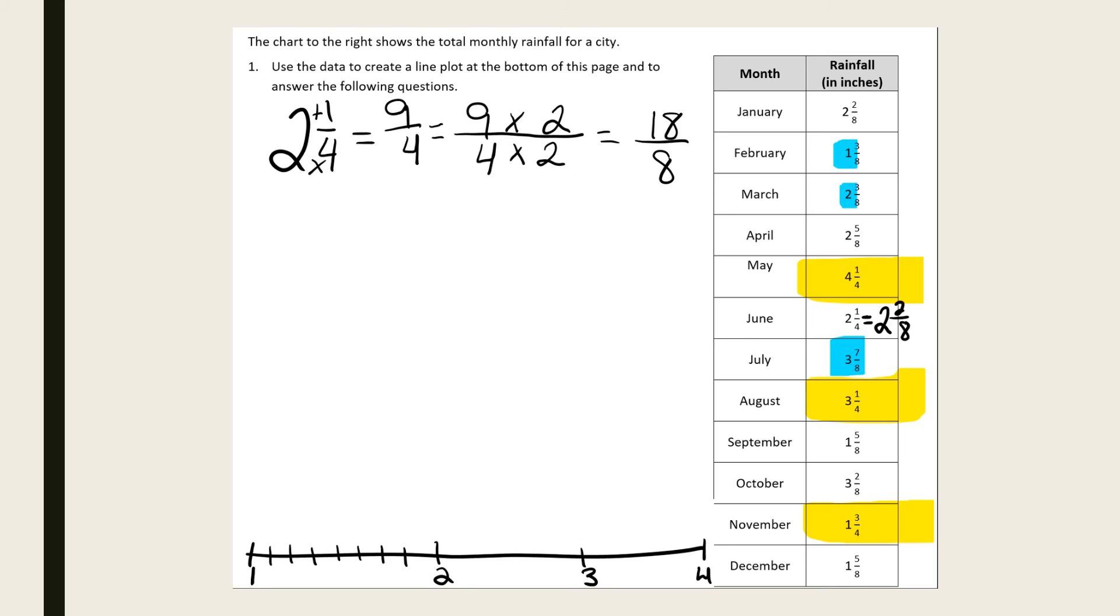So for each number, I'm going to put an X over that fraction. So for example, 2 and 2/8. I've gone to my whole number 2, and now I'm going to count over two small lines: 1, 2, and I'm going to put an X above it.